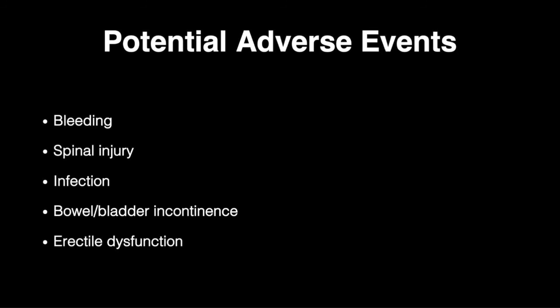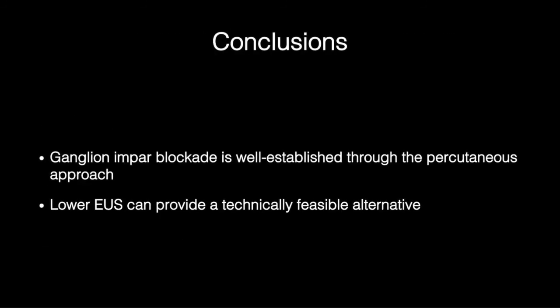Potential adverse events associated with the procedure include bleeding, spinal injury, infection, bowel or bladder incontinence, and erectile dysfunction. Owing to these potential adverse events, it is recommended that solely experienced endoscopists attempt this procedure until further evaluation is performed. In conclusion, the ganglion impar block is well established using the percutaneous approach, and the lower endoscopic ultrasound guided approach can serve as a technically feasible alternative.